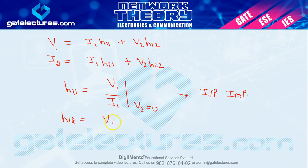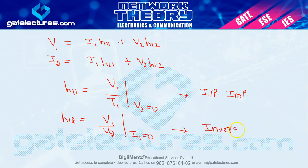Now h12 — h12 = v1/v2 when i1 = 0. यह voltage upon voltage है, so there is no unit — h12 unit-less है. हम जानते हैं output voltage divided by input voltage voltage gain होता है, लेकिन यहाँ हम कर रहे हैं input upon output — तो यह कहलाता है inverse voltage gain.